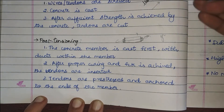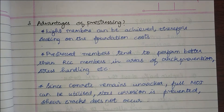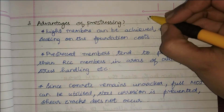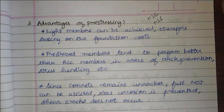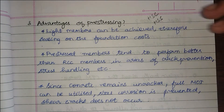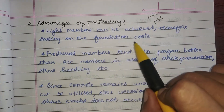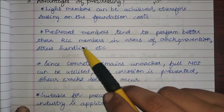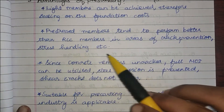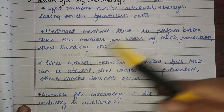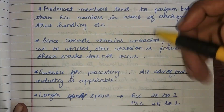The next question covers the advantages of pre-stressing. Pre-stressed structures use high-strength concrete and high-strength steel, which means shallower, lighter sections can be achieved, saving on foundation cost. Pre-stressed members also perform better than RCC members in terms of crack prevention and stress handling.